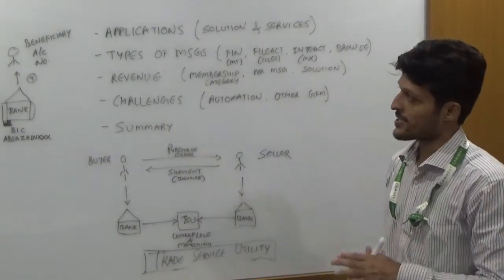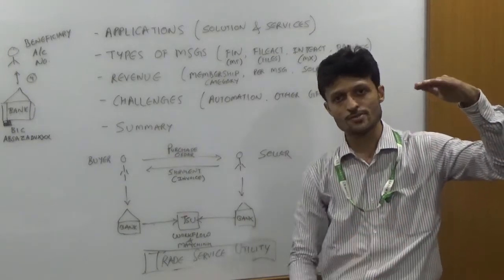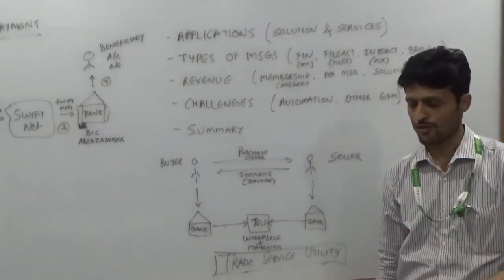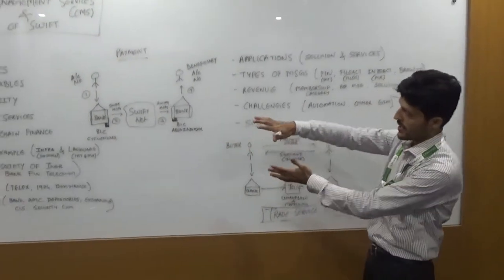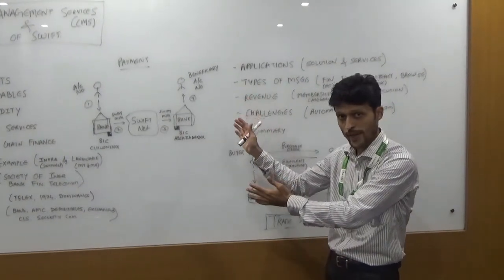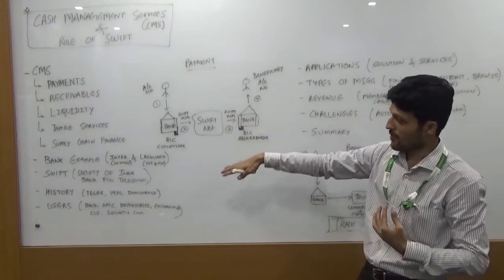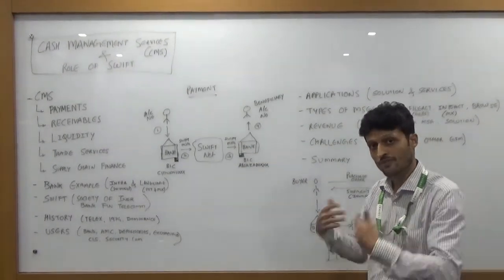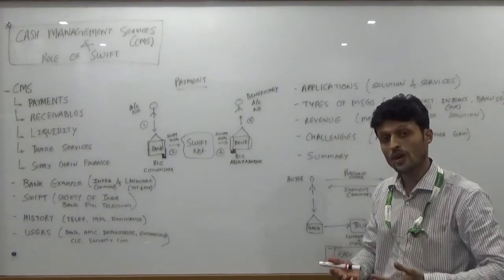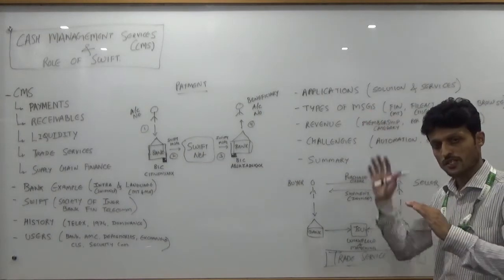Now, I will try to summarize what we have learned so far. We have started the flow with the cash management services, the different functions of the cash management services like payments, receivables, liquidity, channel services, trade service utility, and so on. We moved to the bank example wherein we have explained how the transaction of fund transfer takes place between two different banks with a simple customer like me and probably my friend Jack who is residing in South Africa. We have explained what is the SWIFT network, where SWIFT comes into picture, history of it, how it has penetrated into market, what are the different users, who are the users of the SWIFT network, why they use it. We moved on to the different applications, the solutions and services provided by the SWIFT network.